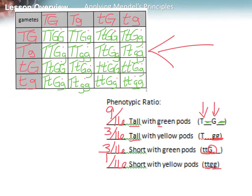This gives us that 9 to 3 to 3 to 1 ratio that occurs whenever you cross two hybrid plants for two hybrid traits.